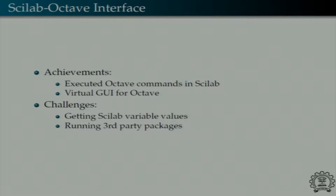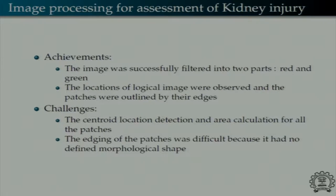The image processing project for kidney injury assessment used microangiography images from confocal microscopy of a kidney to demonstrate that Scilab can be used for complex biomedical image processing. The image consisted of red and green parts — the red being the injured part. After processing, the image was successfully separated into red and green parts, injured patches were identified by pixel location, and the distance between healthy and injured capillaries was determined to guide surgical decisions.